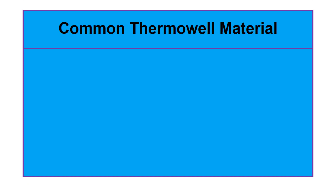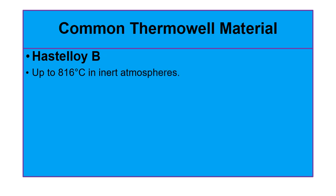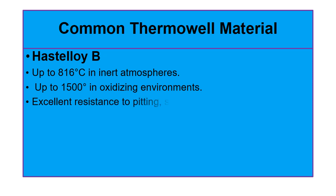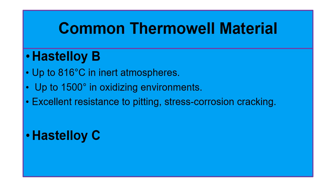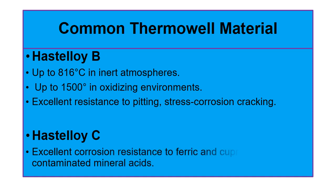The next material we are going to discuss is Hastelloy B. Hastelloy B can be used up to 816 degrees centigrade in an inert atmosphere and 1500 degrees centigrade in an oxidizing environment. It has excellent resistance to stress corrosion cracking, and excellent corrosion resistance to ferric and cupric chlorides, contaminated minerals, acids, and wet chlorine gases.